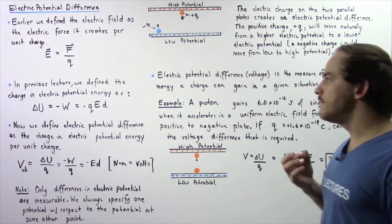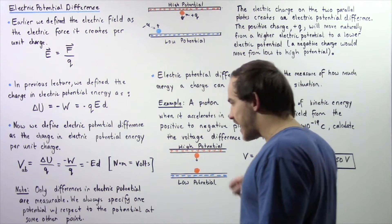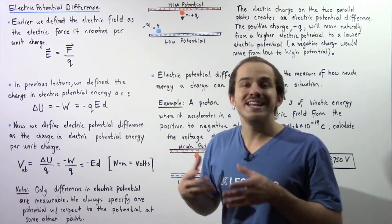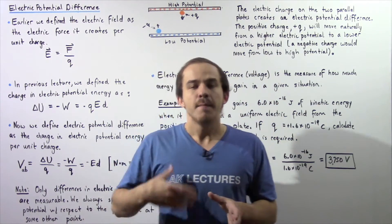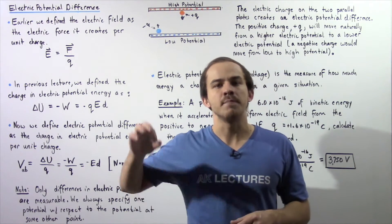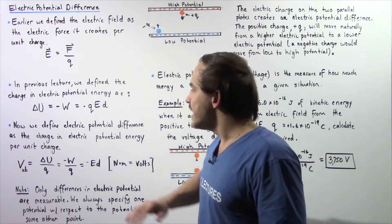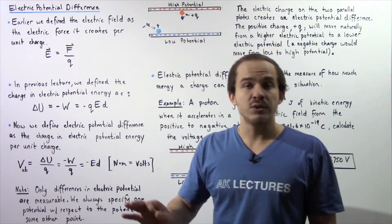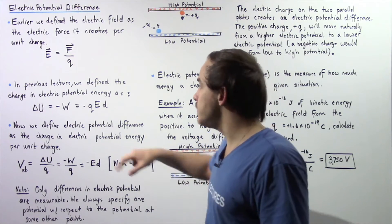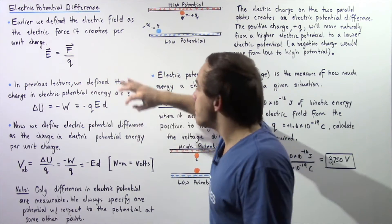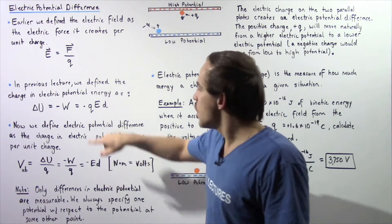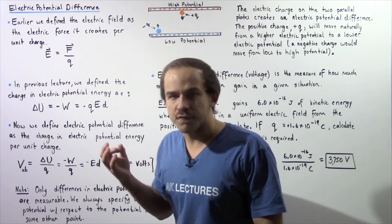In the previous lecture we defined the change in electric potential energy — the change in U between some point A and some point B — as the negative quantity of work done by an electric force to move an electric charge over that distance from point A to point B. Because work equals force multiplied by distance, and the force is an electric force, the work equals Q times E times d. So Q multiplied by E is the electric force.